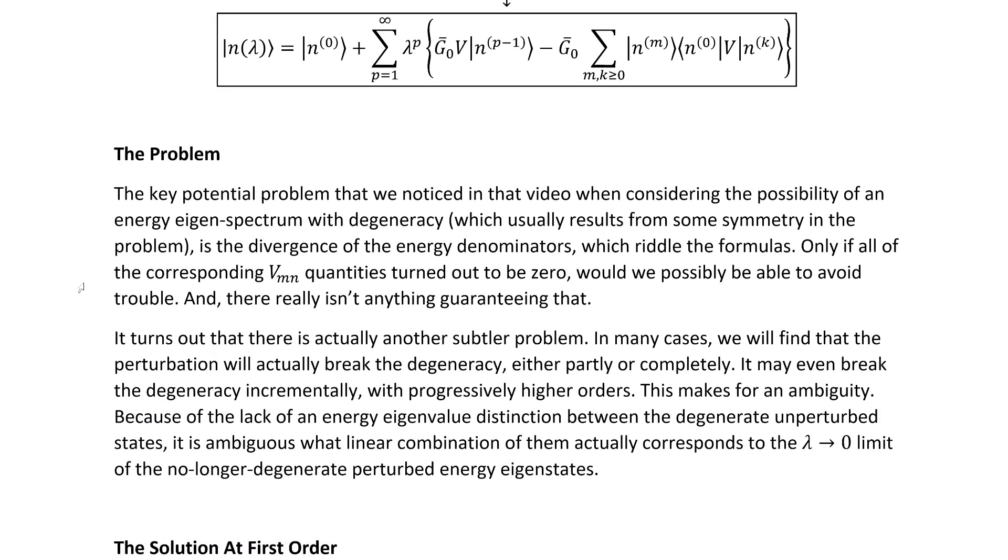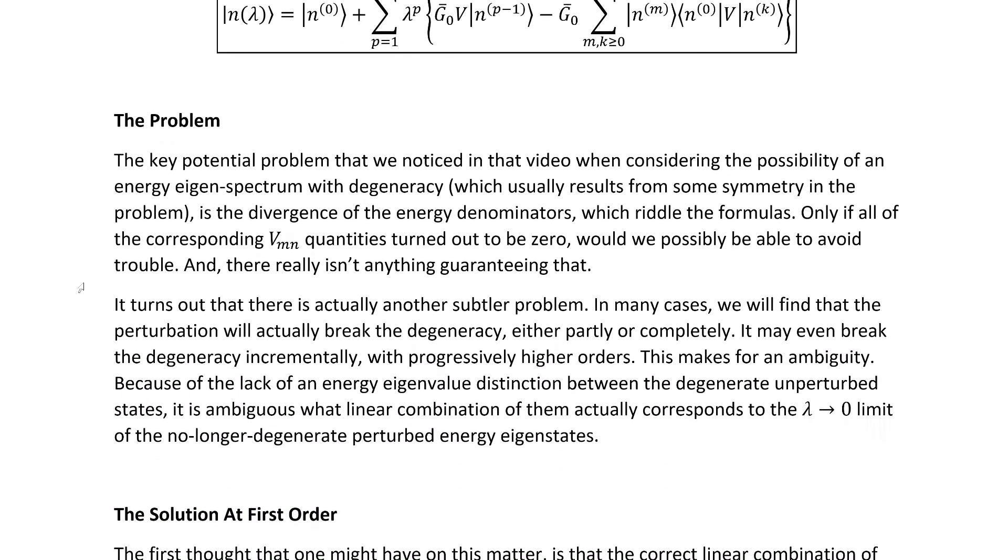The key problem that we noticed in that video when considering the possibility of an energy eigenspectrum with degeneracy, which usually results from some symmetry in the problem, is the divergence of the energy denominators, which riddle all of these formulas. Only if all of the corresponding V_NN quantities turned out to be zero, would we possibly be able to avoid trouble, and there really isn't anything guaranteeing this.